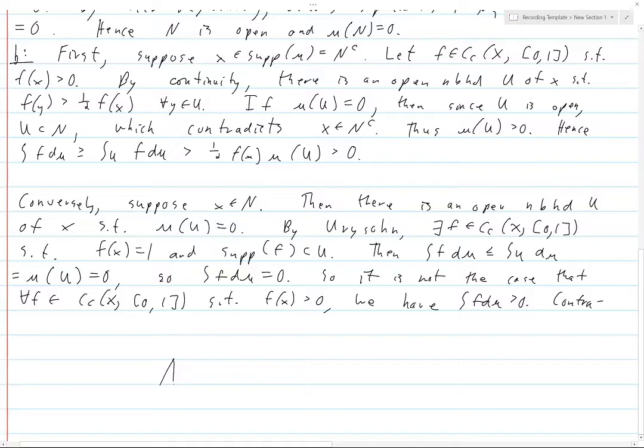So, if integral of F d mu is greater than or equal to 0, is strictly greater than 0 for all F in C, C, X, 0, 1, such that F X is greater than 0, then X is in the support of mu. So, hence, if and only if holds. So, this then, instead of this being, this implies this, it would just be if and only if. And there we go, this completes the proof.